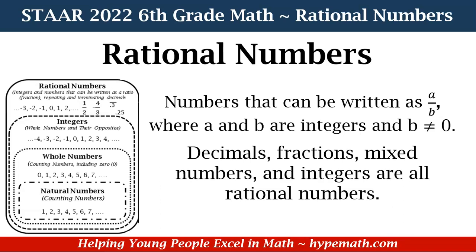Integers are whole numbers and their opposites. Now we're going into the negative side. In our example we have negative 4, negative 3, negative 2, negative 1, 0, and from 0 on the positive side it goes to positive infinity, and on the negative side it goes to negative infinity. Rational numbers are integers and numbers that can be written as a ratio — or a fraction — with repeating and terminating decimals.